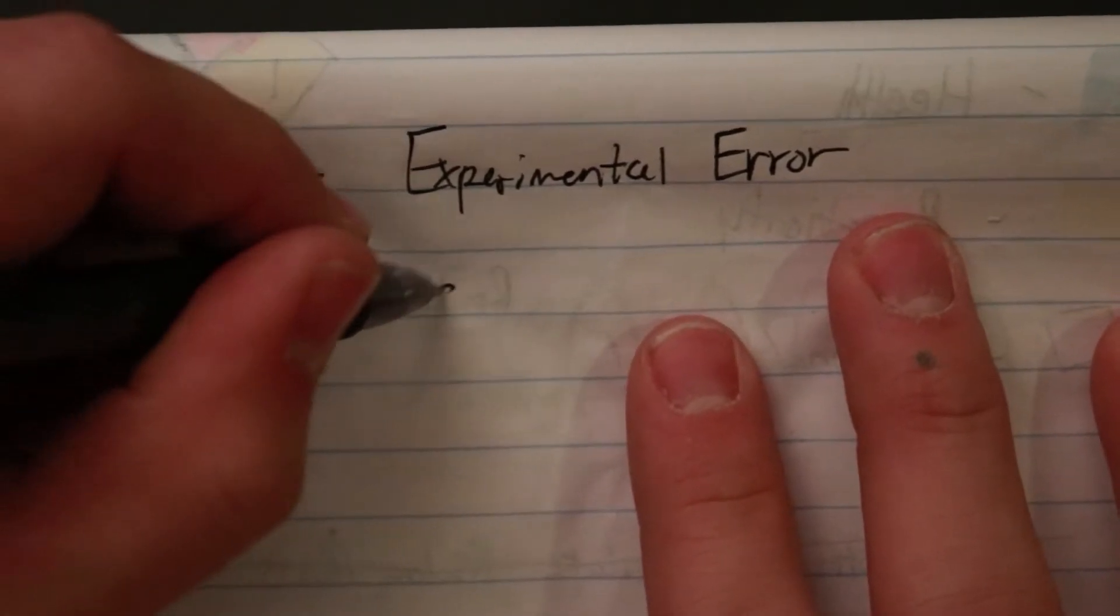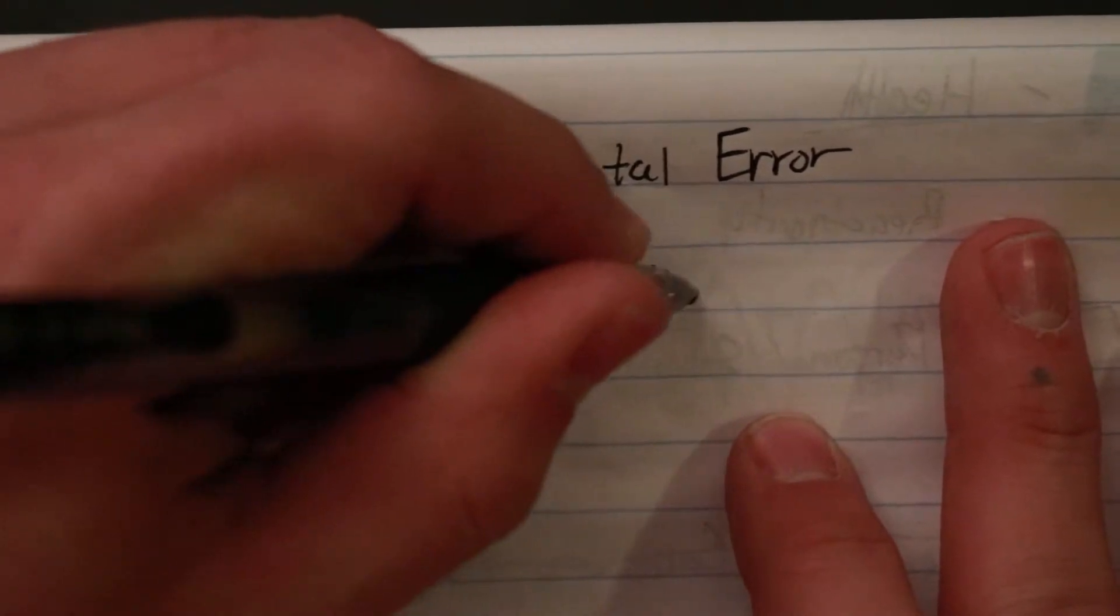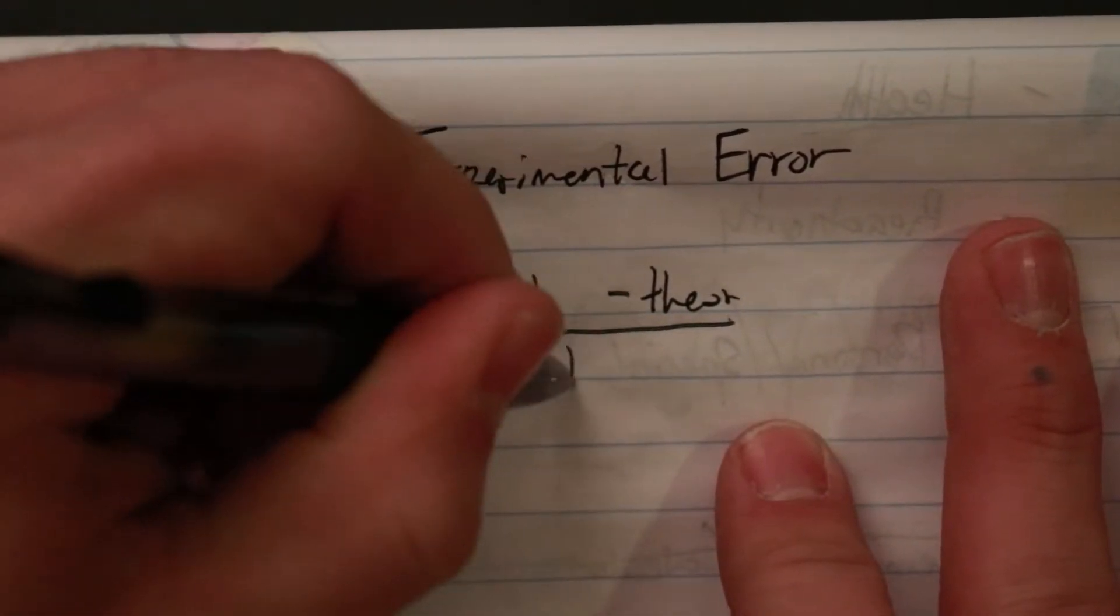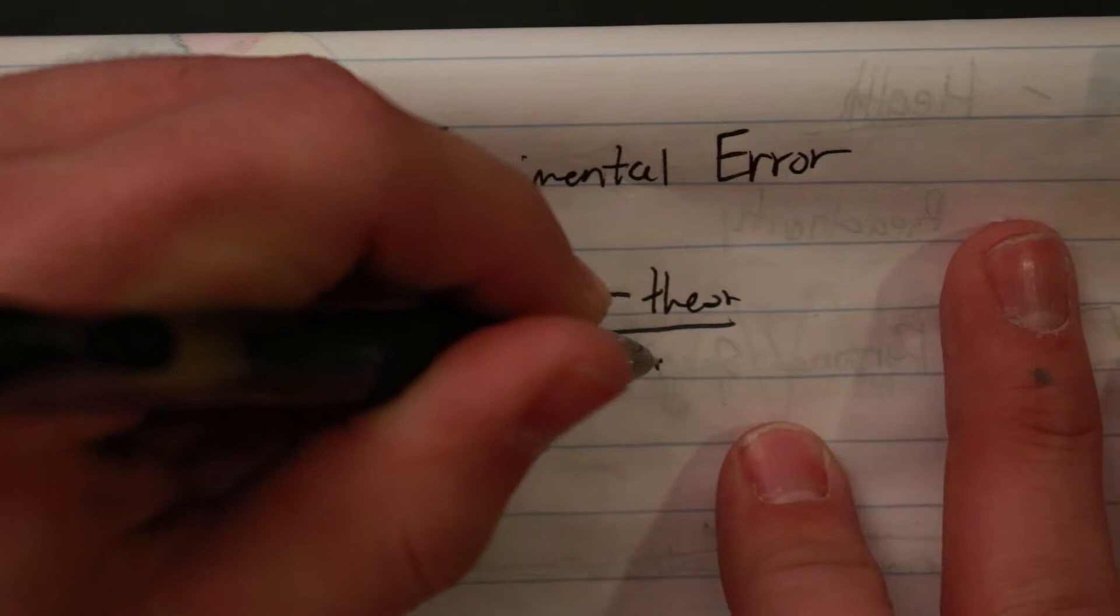And it's just going to be the actual minus the theoretical divided by the theoretical, and then take the absolute value of that times 100. This is to get your percent.